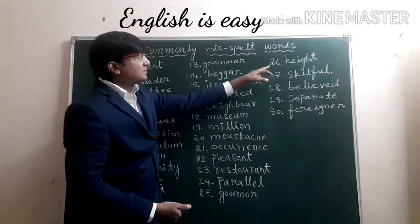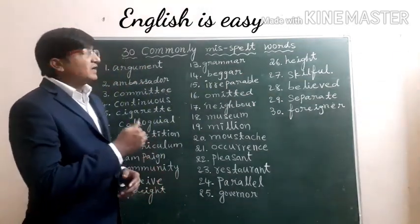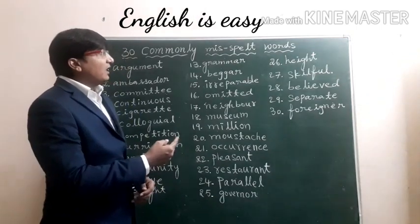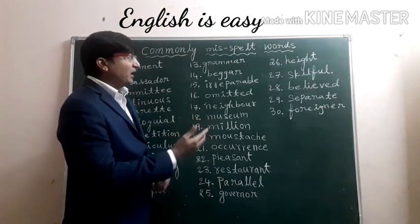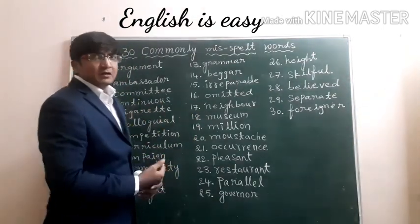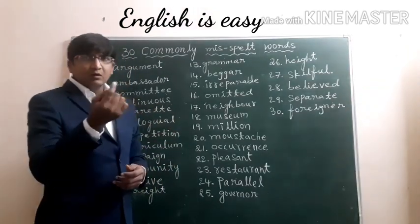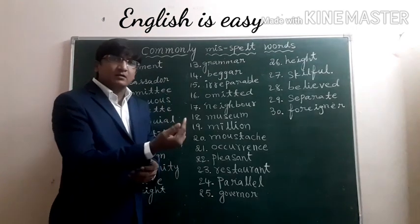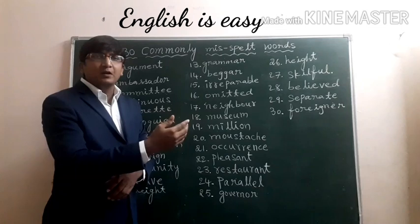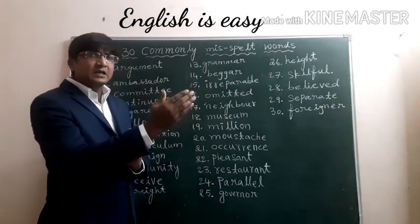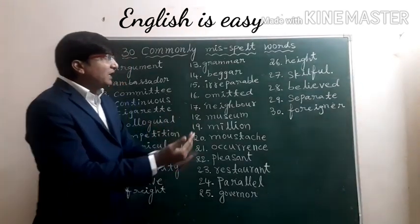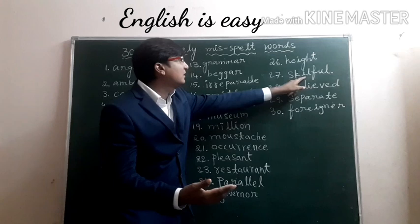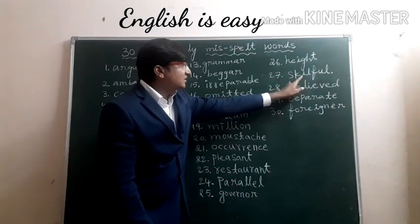Twenty-sixth: Height — H-E-I-G-H-T. That is the correct spelling. But when we write it, we miss E and write only H-I-G-H-T. Twenty-seventh: Skillful. Pay attention here. When we take the word 'skill' alone, it has double L — S-K-I-L-L. And 'full' alone has double L — F-U-L-L. But when it is 'skillful,' we write only single L at the junction — S-K-I-L-F-U-L. Most of the time we write double L, but that's wrong.